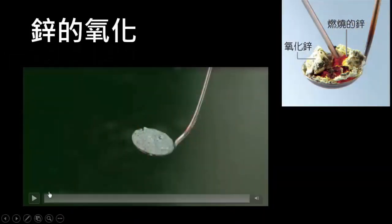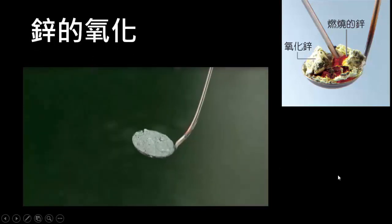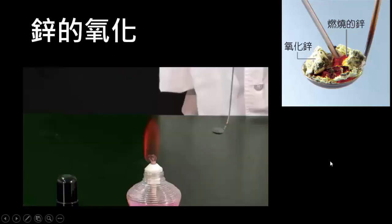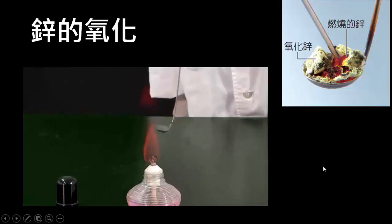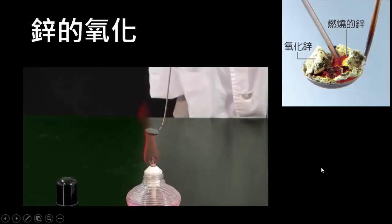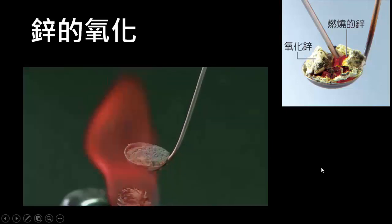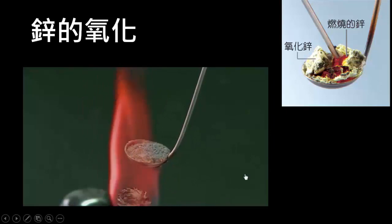再来让我们看看锌粉的氧化现象。同学请看影片中灰白色的锌粉，我们将它移到酒精灯上面加热，观察锌的氧化现象。